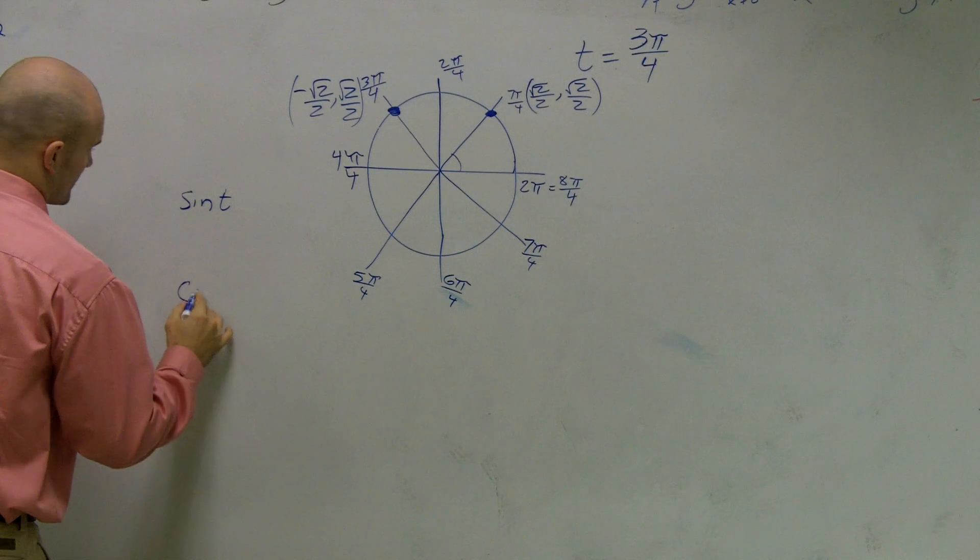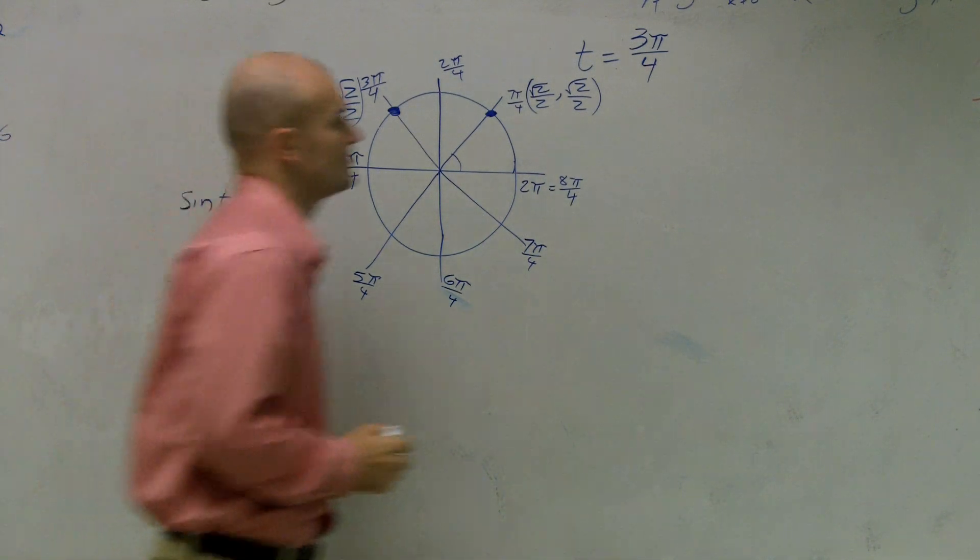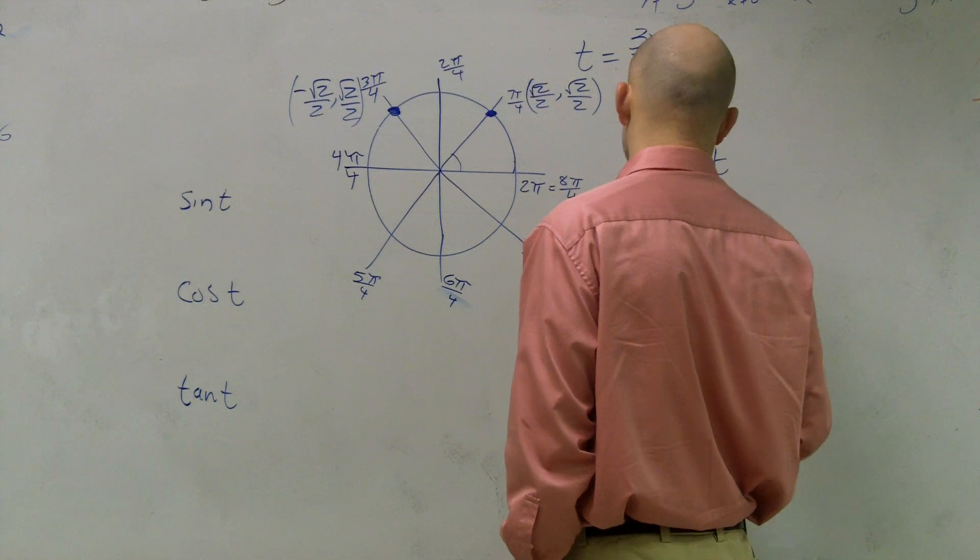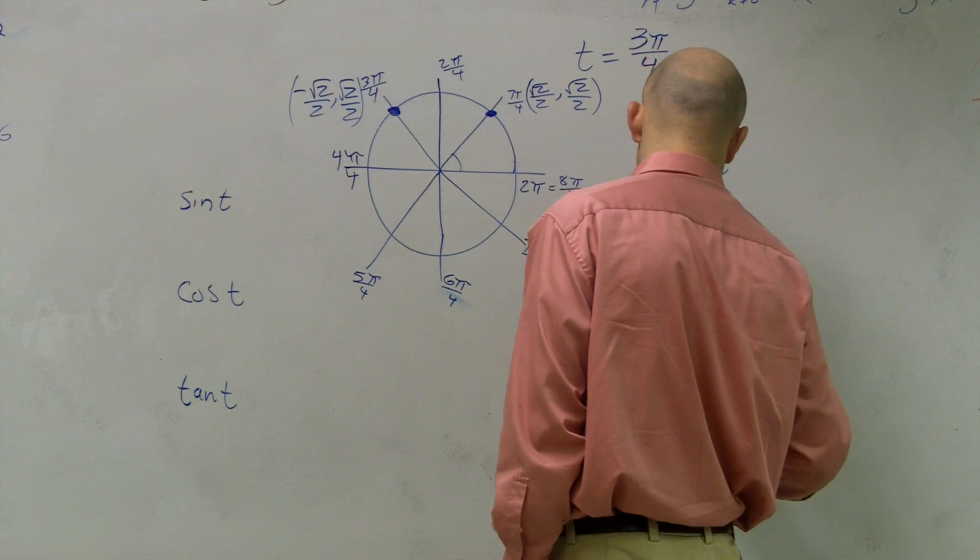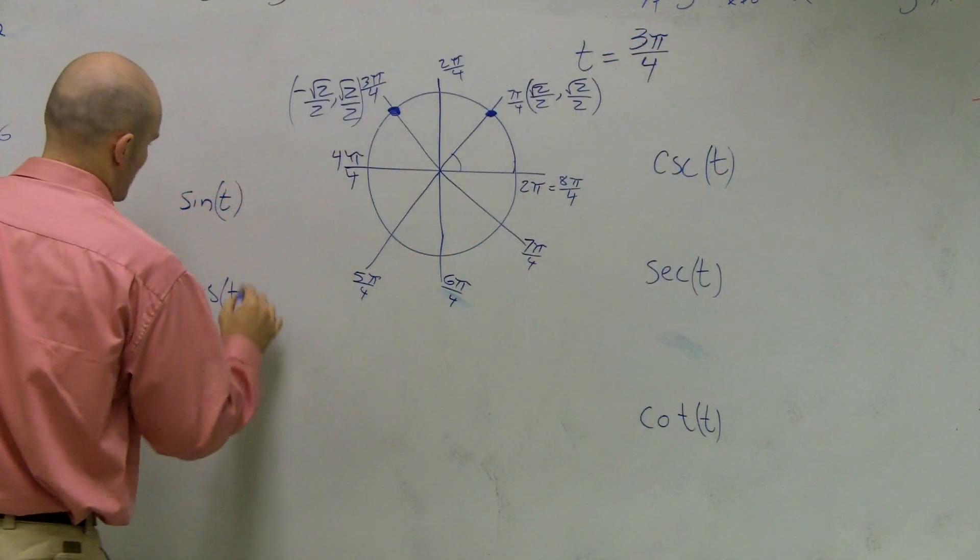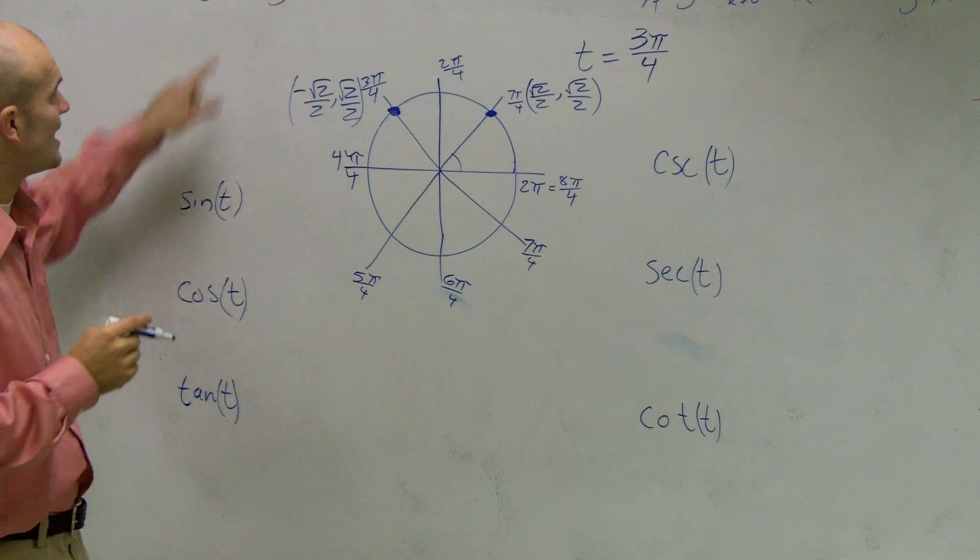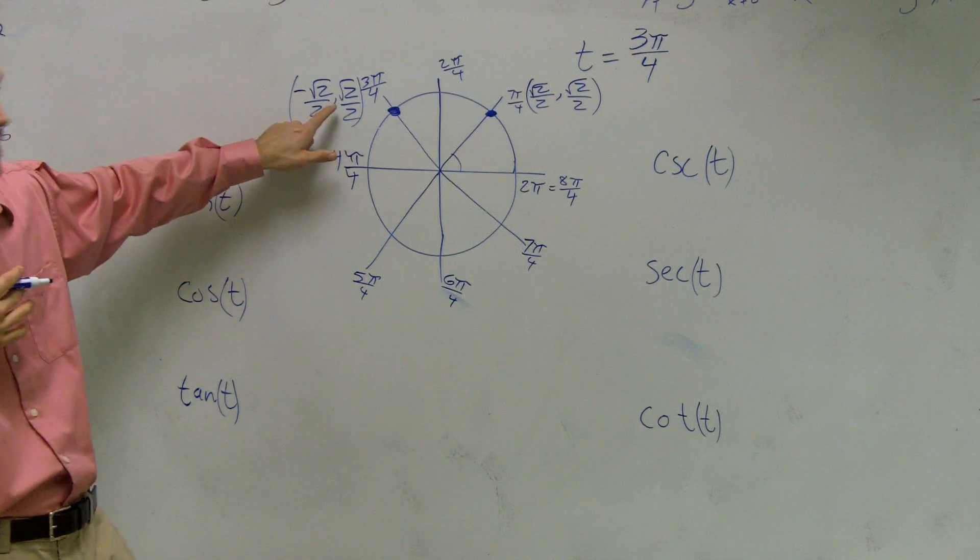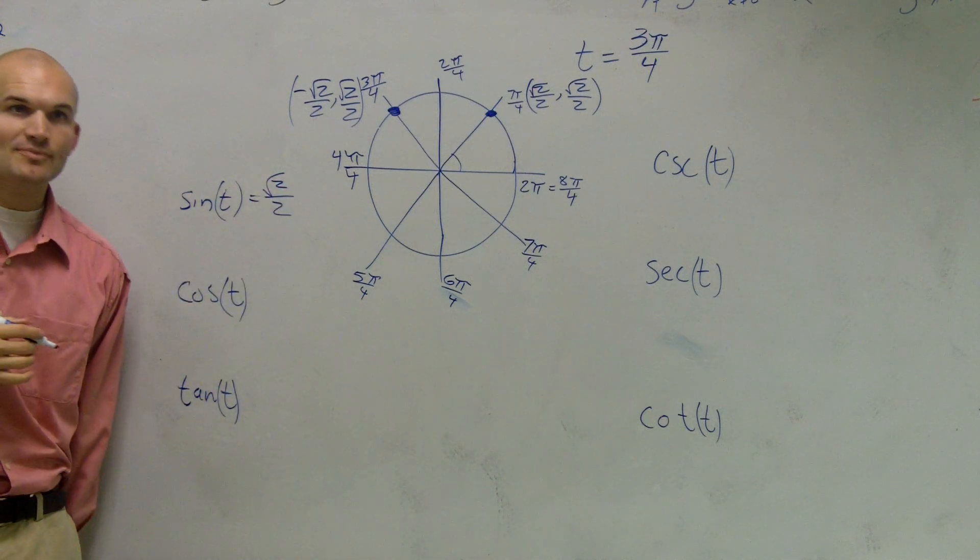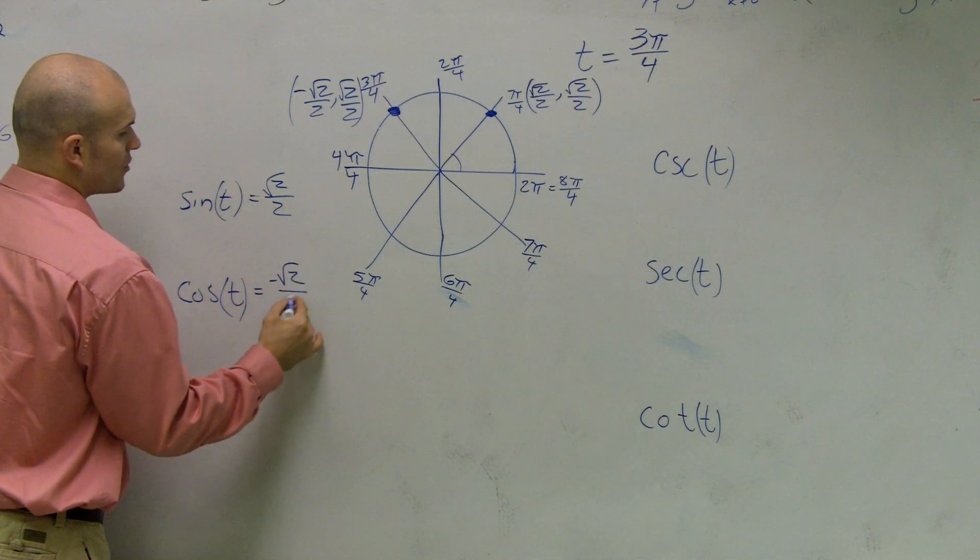So I'm going to say sine of T, cosine of T, tangent of T. Remember the sine. I think I have it written up here. Sine is the y coordinate of your point. So y is going to be square root of 2 over 2. It's really that simple of just plugging it in. Cosine is going to be your x. Negative square root of 2 over 2.